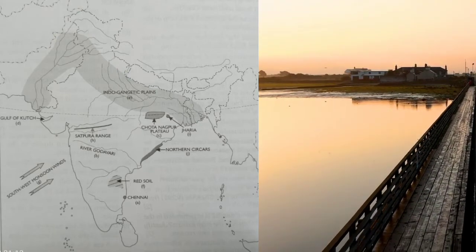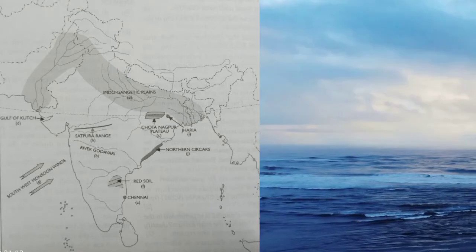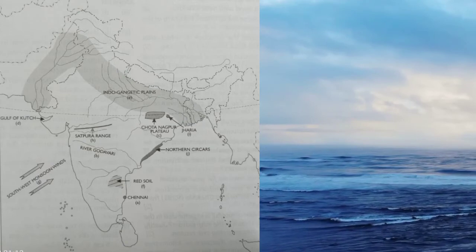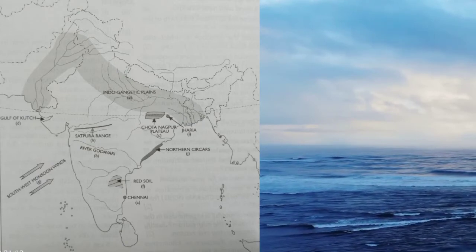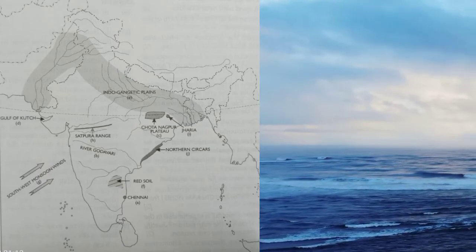'G' — mark and name the winds which bring rain to Mumbai in July and August. 'H' — mark and name the Satpura Range. 'I' — mark and name the Jharia coal field.